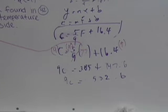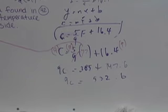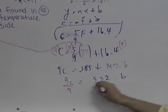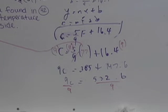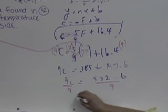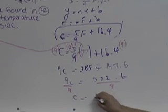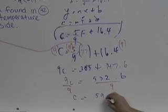Nine C equals, let's be nice, three hundred eighty-five plus one forty-seven point six, which is five thirty-two point six. So, nine C equals five thirty-two point six. Divided by nine. Divided by nine. And can somebody with a calculator do that? Yes, fifty-nine point eight. All right. So, C equals? What? Fifty-nine point eight. All right.